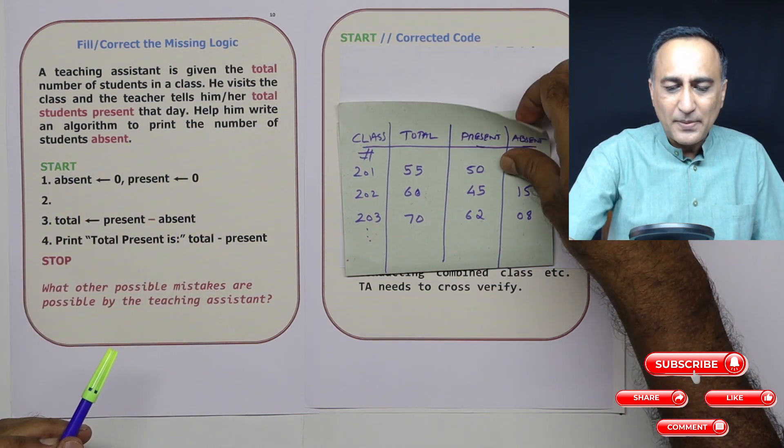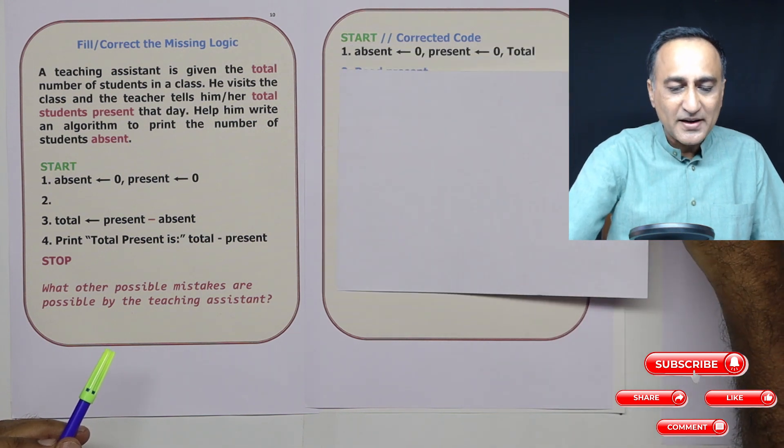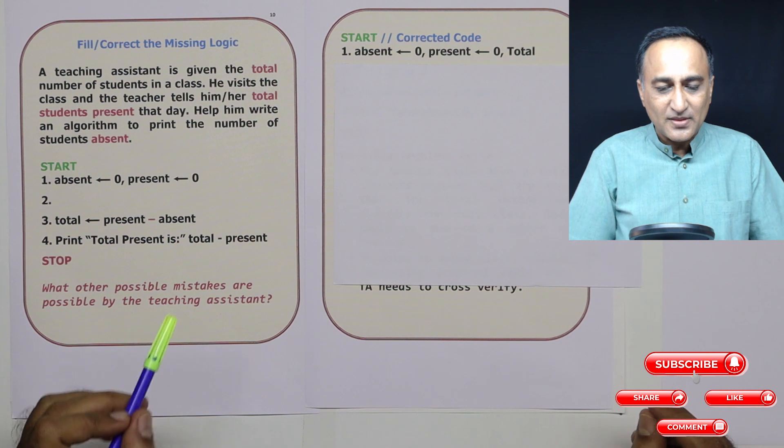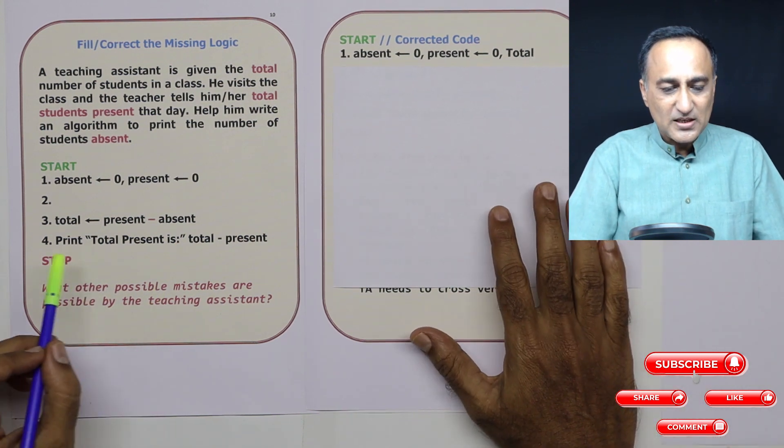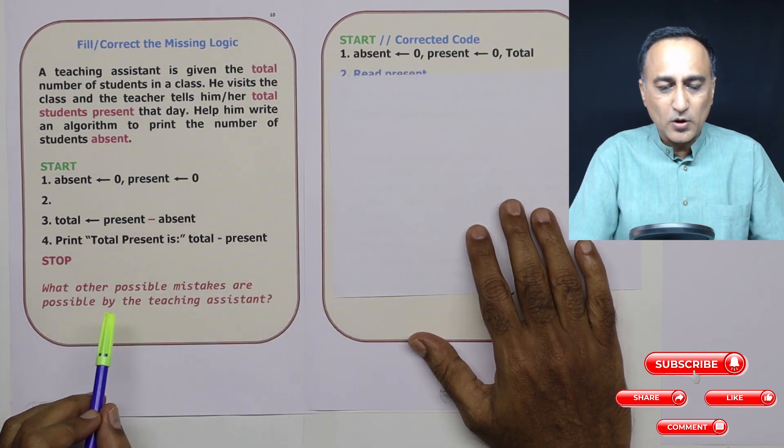So first let's try to do a comparison with how the correct logic should look, and then we'll go about finding what are the different challenges. Here if you see step number one absent present, he is missing total. So you have declared the variable total here.